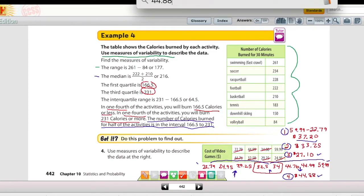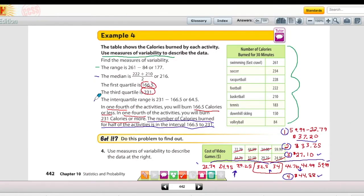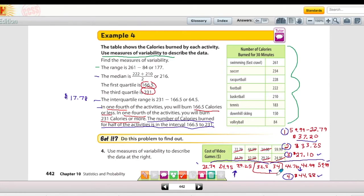And then the last thing to do is to subtract those, 44.88 minus 27.10, and it's 17.78. So the interquartile range here for this problem is 17.78.